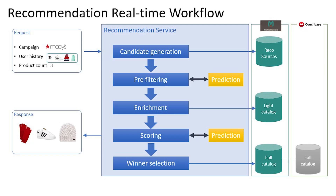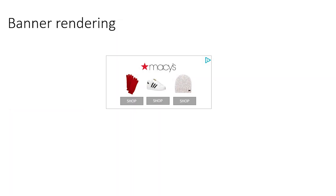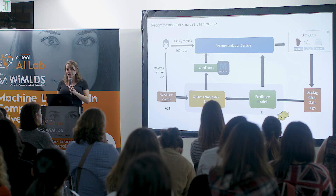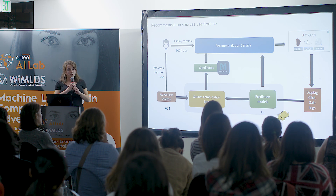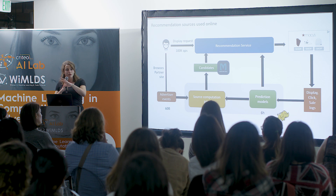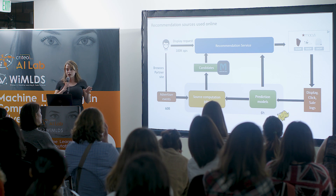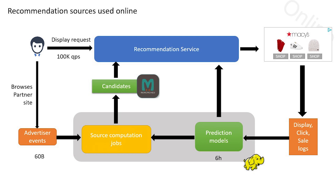In the end, we have the three top products that go into the banner, which is rendered as shown. To summarize: offline, prediction models help us build sources — product-to-25-product similarities or complementarities. These are used online, where they're rescored with all the online features we have, to produce a banner that generates clicks and sales and helps us have more data to train our models.